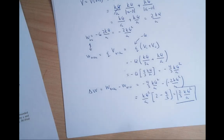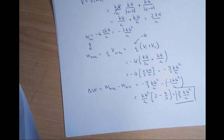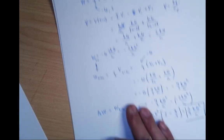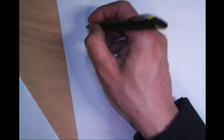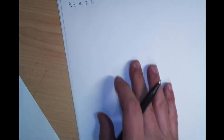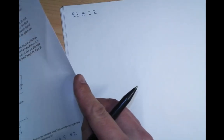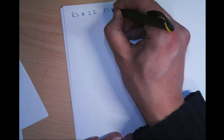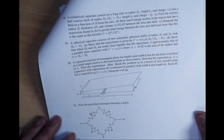Now let's do review sheet number 22, which I believe is problem set five, number two. You just handed it in, so hopefully it's not so horrible. The circuit below has the same reading on the ammeter when both switches are open and when both switches are closed. What is R?